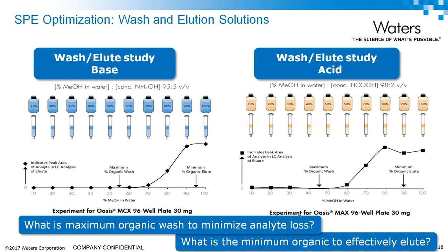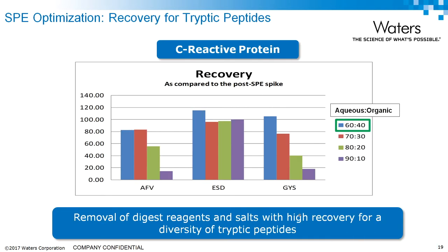The example on the right is quite similar: the analyte starts coming off the sorbent at 60%, so you'd back off to about 45% for your wash. Maximum recovery occurs around 80%, so you'd elute at about 90%, giving a little extra. This approach can be very effective at creating a narrow window of elution around the analyte of interest and ending up with a very specific methodology.